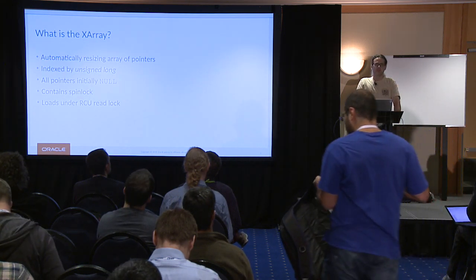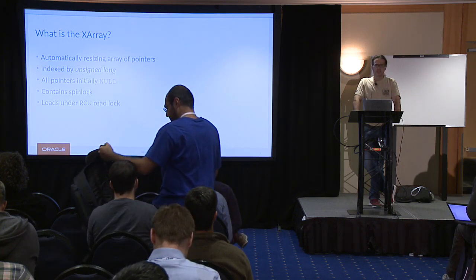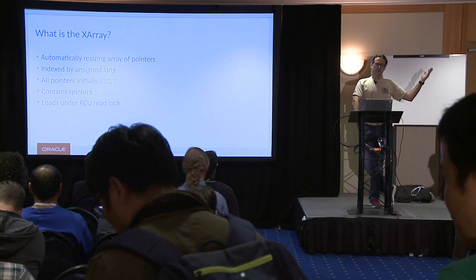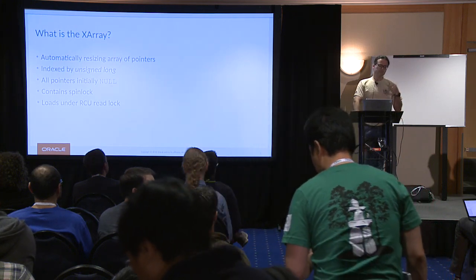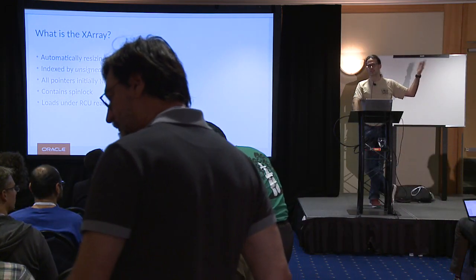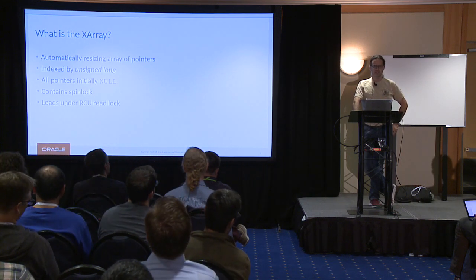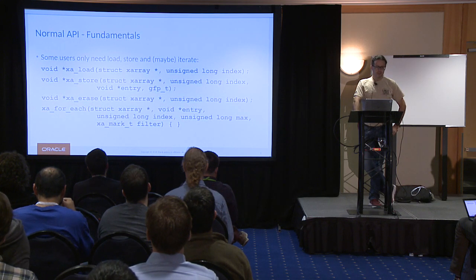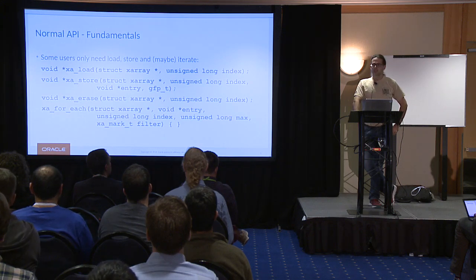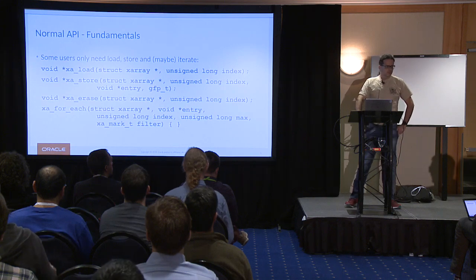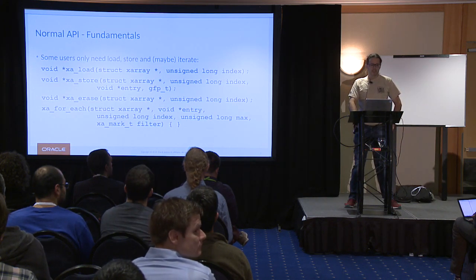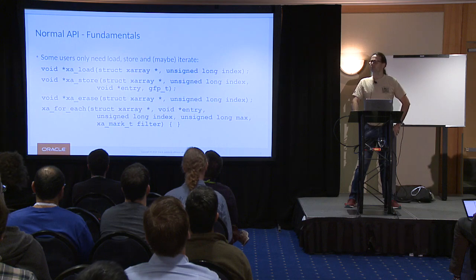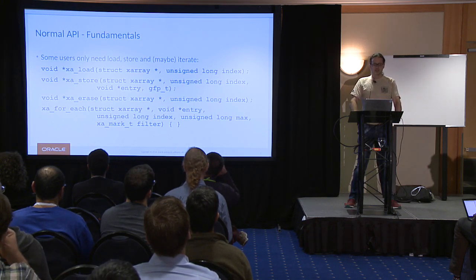It's RCU safe. If you do a load from it, it won't take the lock. You can choose to use the spin lock inside the XArray to make sure someone who's deleting isn't going to step on your toes, but that's not a necessary part of the API. Fundamentally, you can just do loads and stores because it's an array.